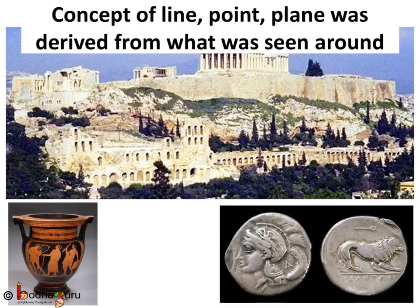The Greek Mathematicians of Euclid's time thought geometry as an abstract model of the world in which they lived. The concept of point, line, plane and so on were derived from what was seen around them.